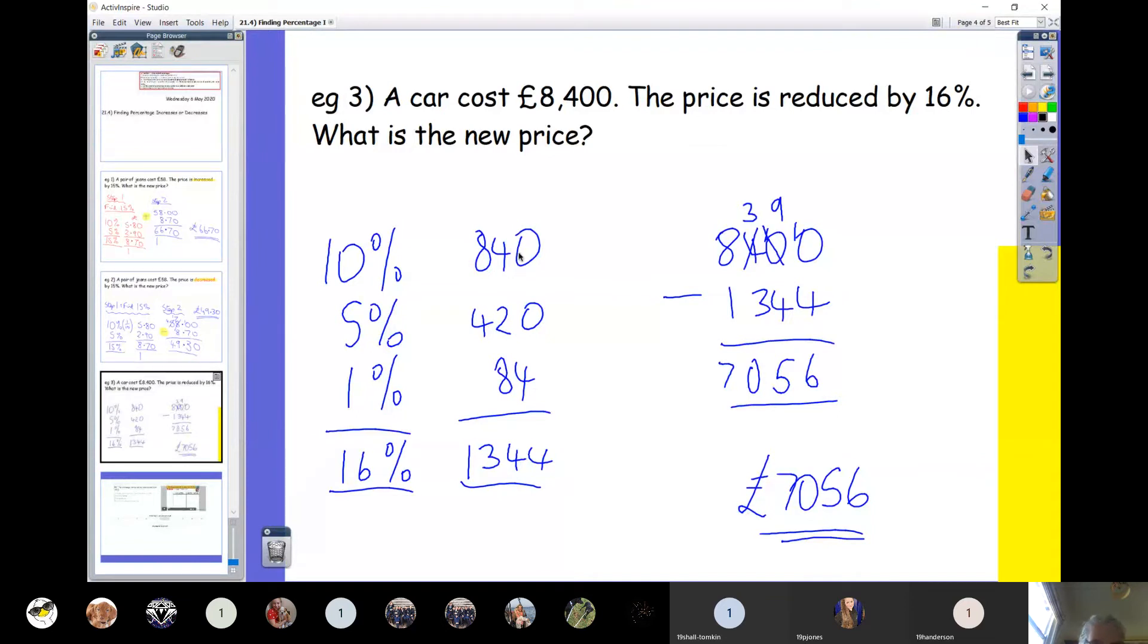To get our 16%, we just add up these three numbers. So the percentage the price has been reduced by is £1,344. What is the new price of the car? It was £8,400, take away the £1,344, and that gives us £7,056. So that's it, guys. Pretty straightforward today if you were okay with what we did last lesson.